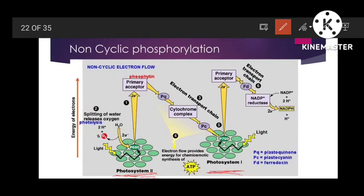Non-cyclic phosphorylation is a process in which light energy falls on the photosystems and is converted into chemical energy. ATP and NADPH are produced as a result of non-cyclic phosphorylation. Let's start how it occurs.